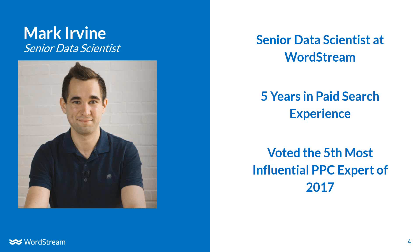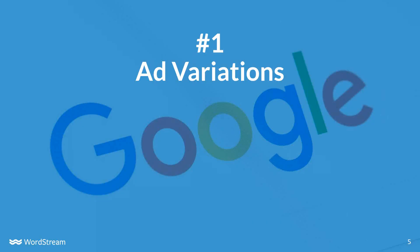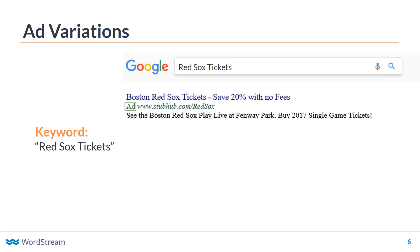The first big change every single advertiser can benefit from is called Ad Variations. Ad Variations is a way in which we control our ads and what kind of copy exists in them. In paid search accounts, we're likely going to create an ad for our keywords. If I'm trying to sell Red Sox tickets, I'm going to create a paid search expanded text ad — I've got a headline, a second headline, some description text — and I'm going to do my best to create this ad for that keyword.